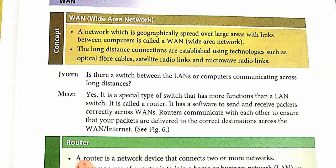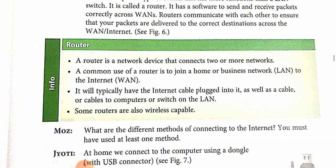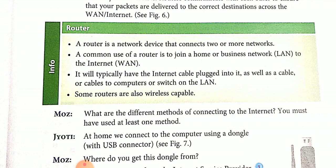The WAN connection network may be located throughout a country or even around the world. For example, the internet and ATM facility. When a single company owns and controls a wide area network, it is often called an enterprise network. There is a special type of switch between the LANs or computers communicating across long distances — it has more functions than a LAN switch. It is called a router. It has software to send and receive packets correctly across the WAN. Routers communicate with each other to ensure that your packets are delivered to the correct destination.